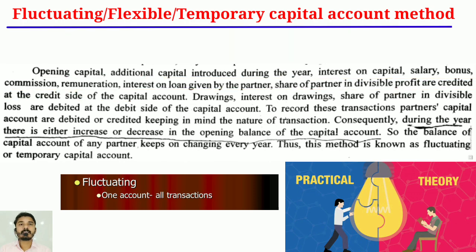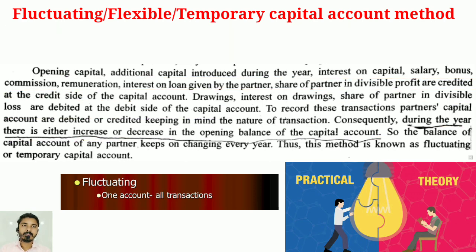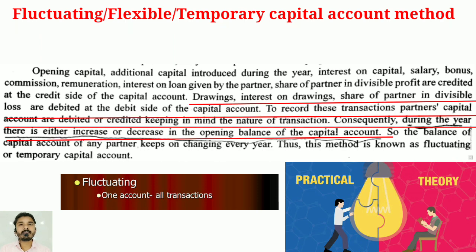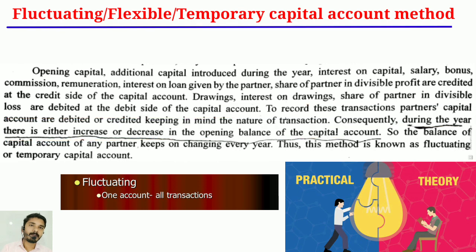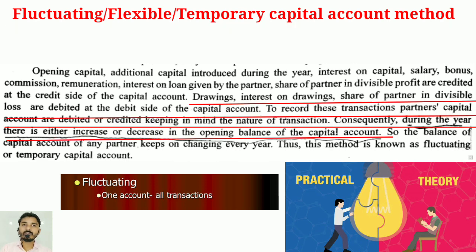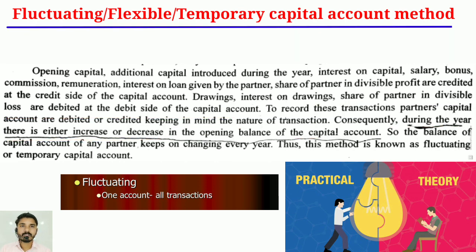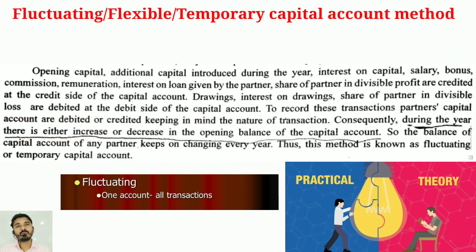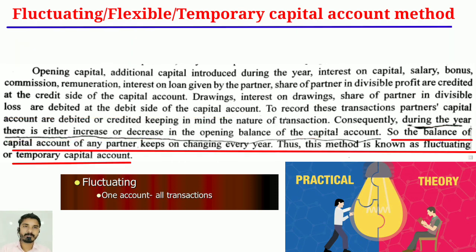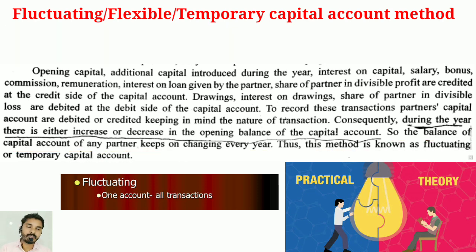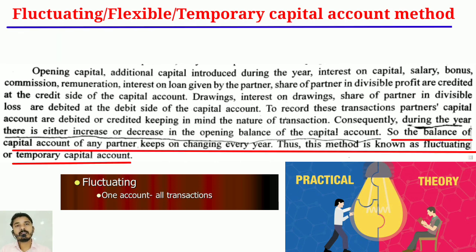The following items are debited at the debit side of the capital account: drawings, interest on drawings, and the partner's share of indivisible loss. To record these transactions, partner's capital accounts are debited or credited keeping in mind the nature of the transaction. Consequently, during the year there is either an increase or decrease in the opening balance of the capital account, so the balance keeps changing every year. Thus, this method is known as the fluctuating or temporary capital account method.